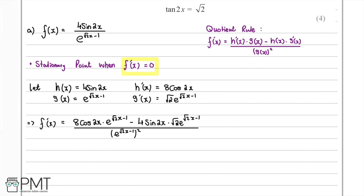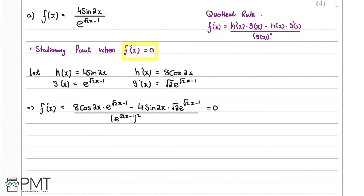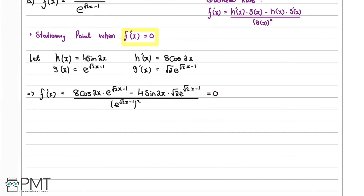To find the stationary point we set f'(x) equal to zero. Multiplying both sides by the denominator clears it, leaving: 8 cos(2x) times e to the power of root 2x minus 1, minus root 2 times 4 sin(2x) times e to the power of root 2x minus 1, equals zero. We notice there is a common exponential factor on both sides.